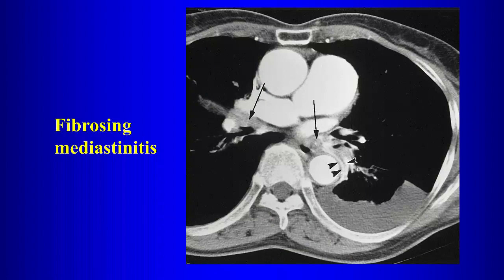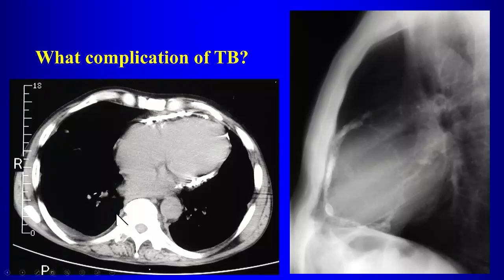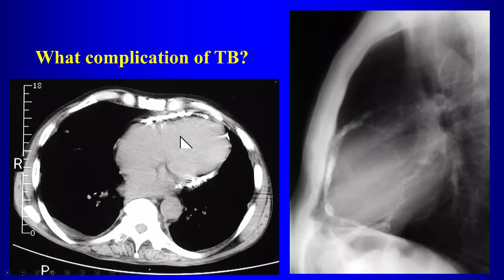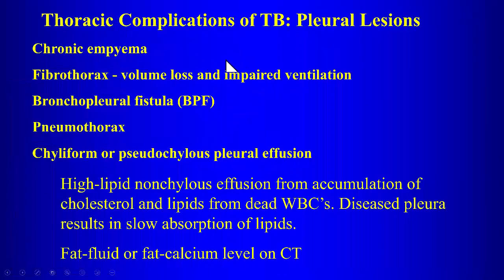Fibrosing mediastinitis can occur from tuberculosis, although histoplasmosis is the infection most closely associated with fibrosing mediastinitis. Pericardial calcification associated with constrictive pericarditis is also a complication of TB. Worldwide, TB is a common cause of constrictive pericarditis, though not as common in the United States.